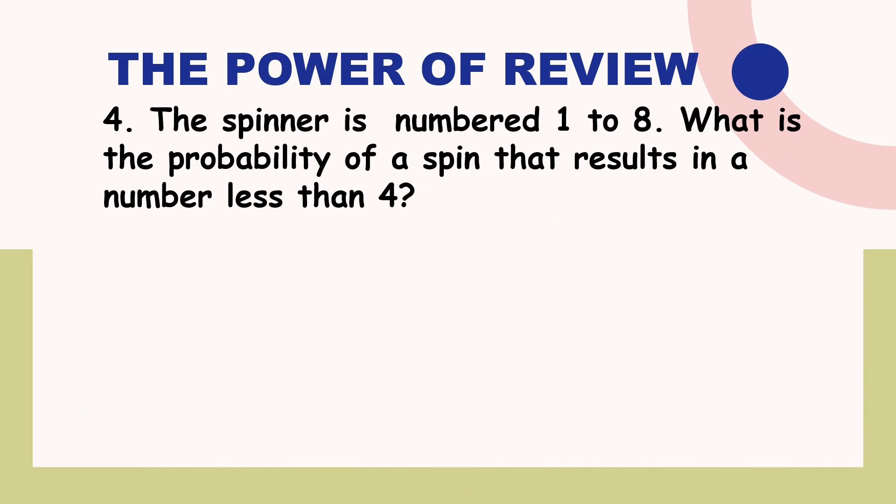How about question number four? The spinner is numbered one to eight. What is the probability of a spin that results in a number less than four? Is it A. One fourth? Is it B. Three over eight? Is it C. Three over four? Or D. One over eight?